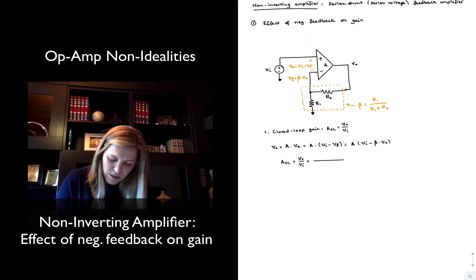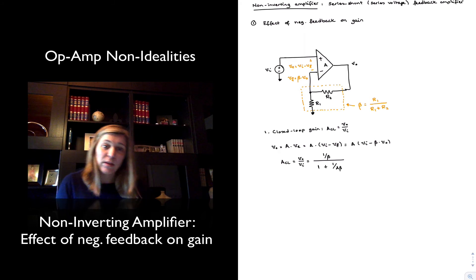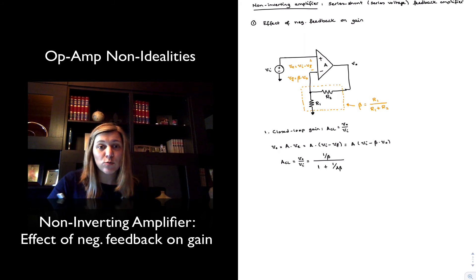Which is going to be, just as before, one over beta divided by one plus one over A times beta. That's after you have already divided numerator and denominator by A times beta.